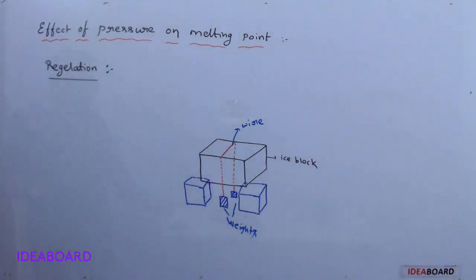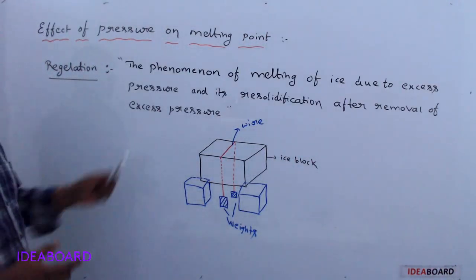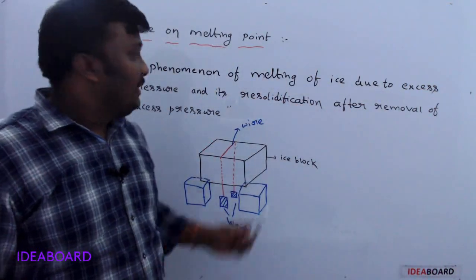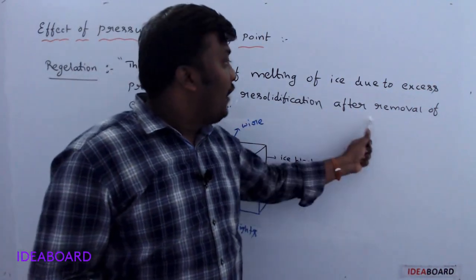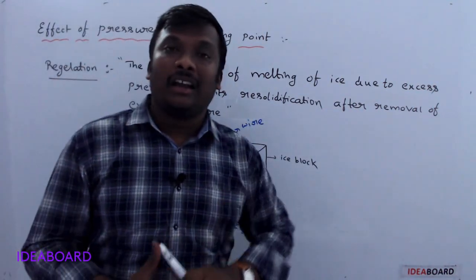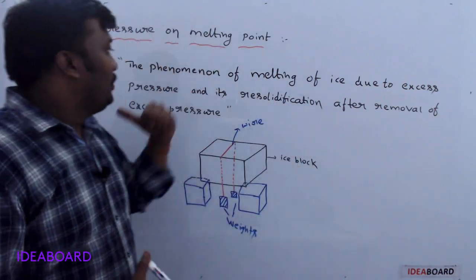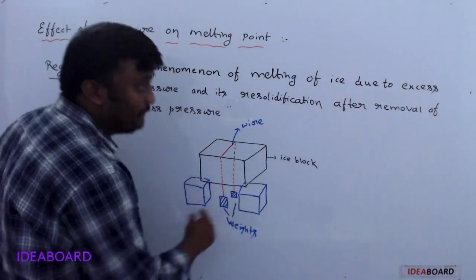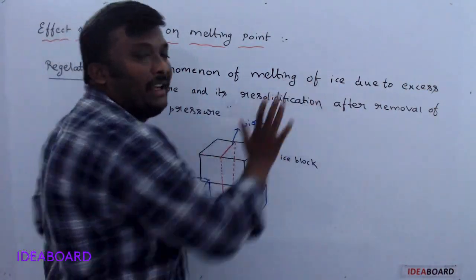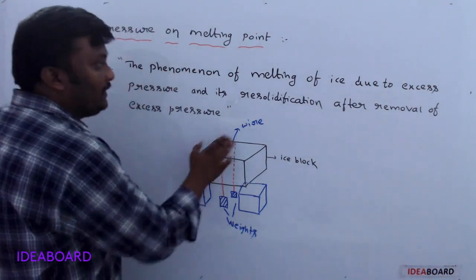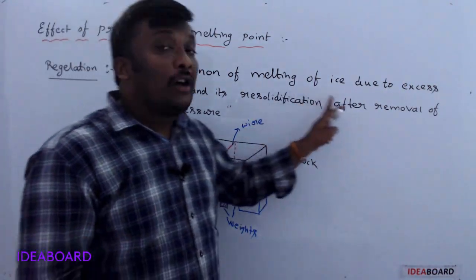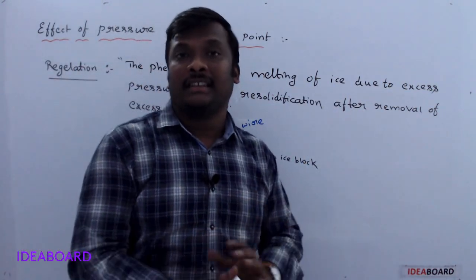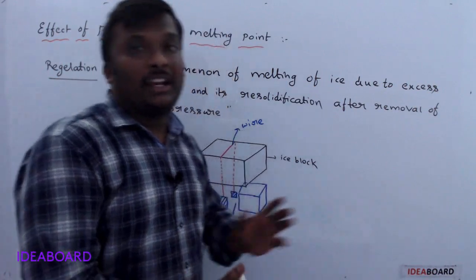This process is called regelation. The phenomenon of melting of ice due to excess pressure, and its re-solidification after removal of excess pressure, is called regelation. Due to excess pressure from the weights, melting of ice takes place; then, after removal of excess pressure, re-solidification takes place.